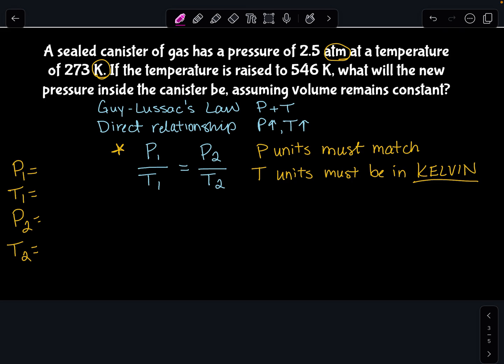So let's read. A sealed canister of gas has a pressure of 2.5 atm, so that's my first pressure. At a temperature of 273 Kelvin, that's my first temperature. If the temperature is raised to 546 Kelvin, what will be the new pressure?